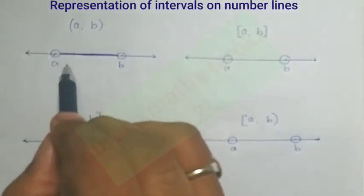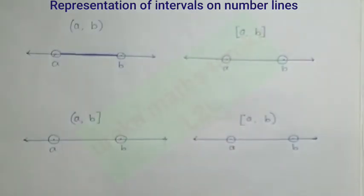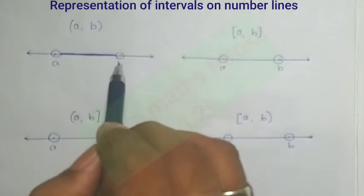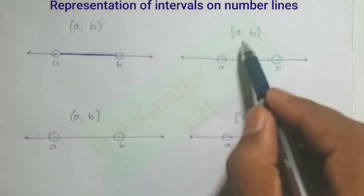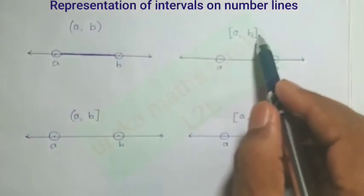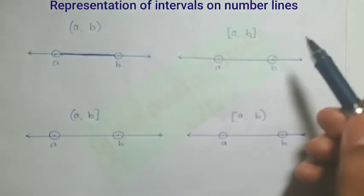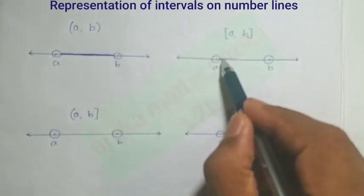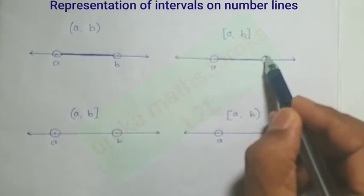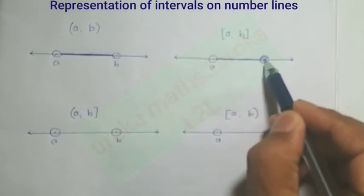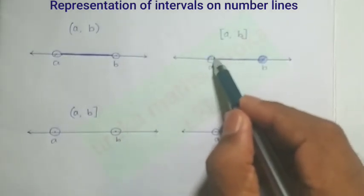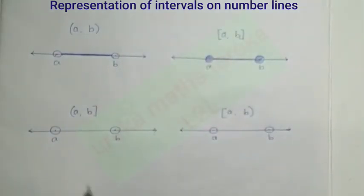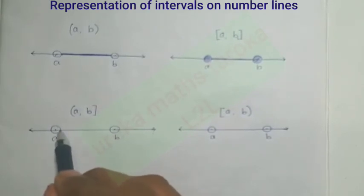On the number line, the open interval is represented with open circles at a and b, indicating they're excluded. For the closed interval, a and b are included, so we fill in the circles to show both endpoints and everything between them is considered.